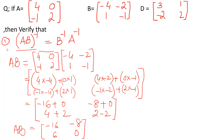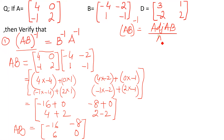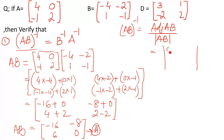Now we take the multiplicative inverse of AB. The formula is: AB whole inverse equals adjoint of AB divided by the determinant of AB. We need to find the adjoint of AB. For the adjoint, we switch the positions of the diagonal elements: 0 comes to the top-left and -16 goes to the bottom-right. Do not change the sign — only switch position.